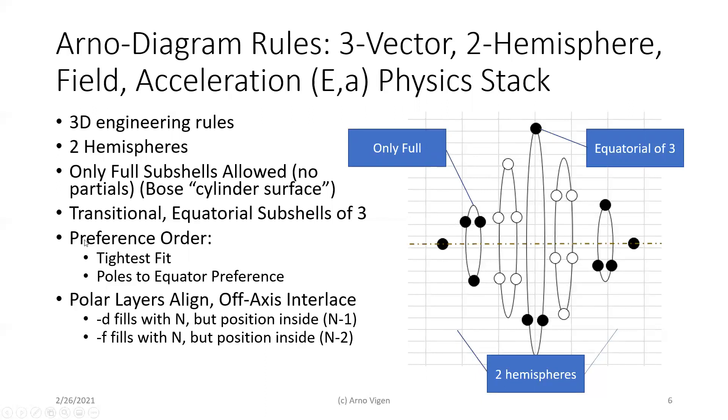So that means the logic of an Arno diagram is tightest fit and preference to go from the poles towards the equator because of weak force. So that means, in any case, we can build stable electron subshells in configurations that are only full subshells towards the poles as tight as possible. Now, that also means, though, that these Ds are inside and the Fs are inside two layers, as by the physical diagram we did before.